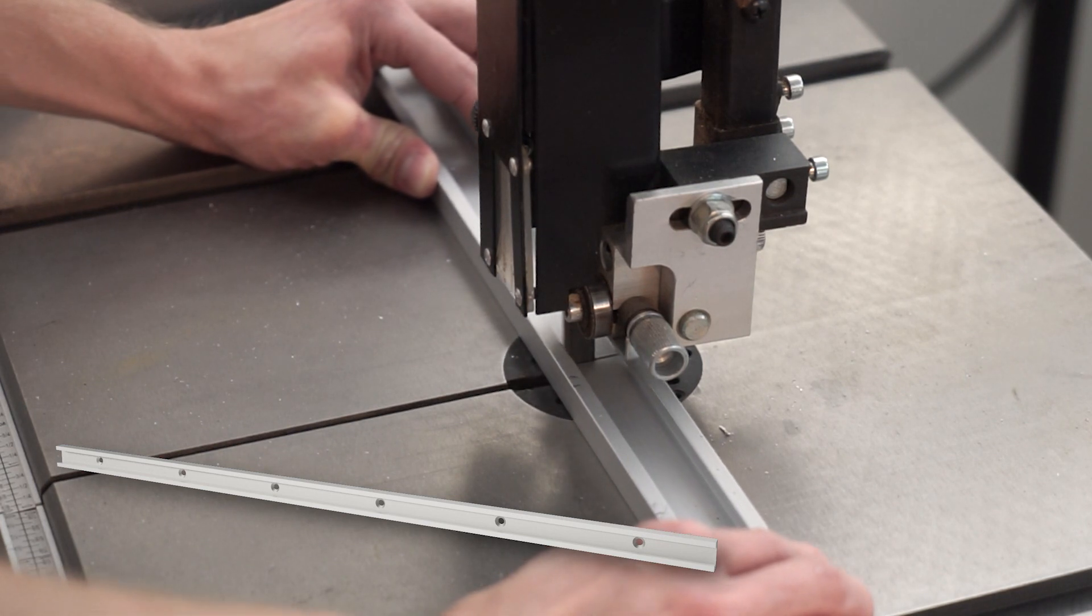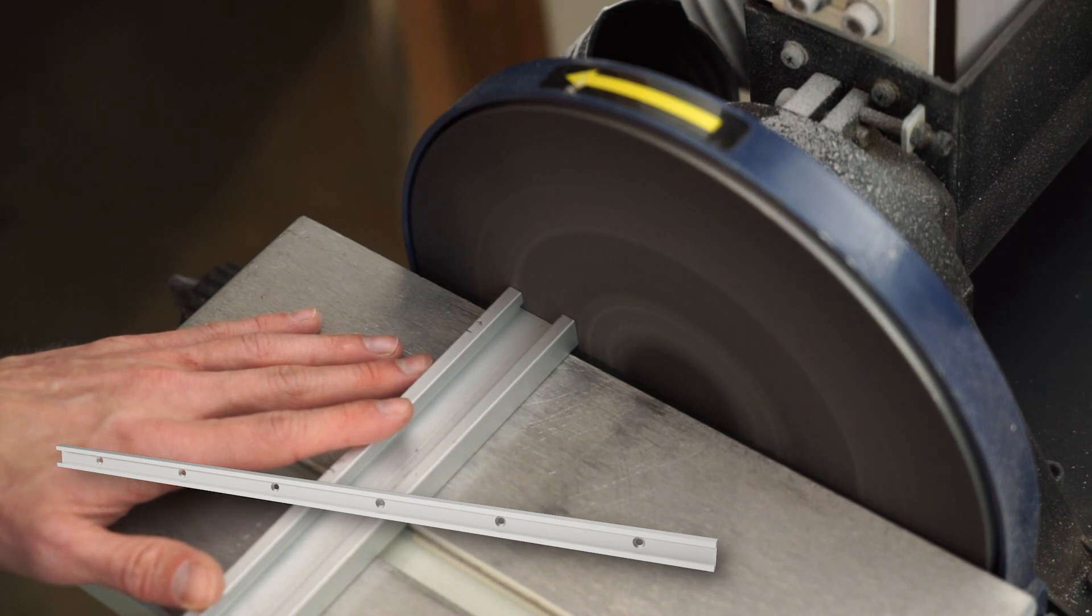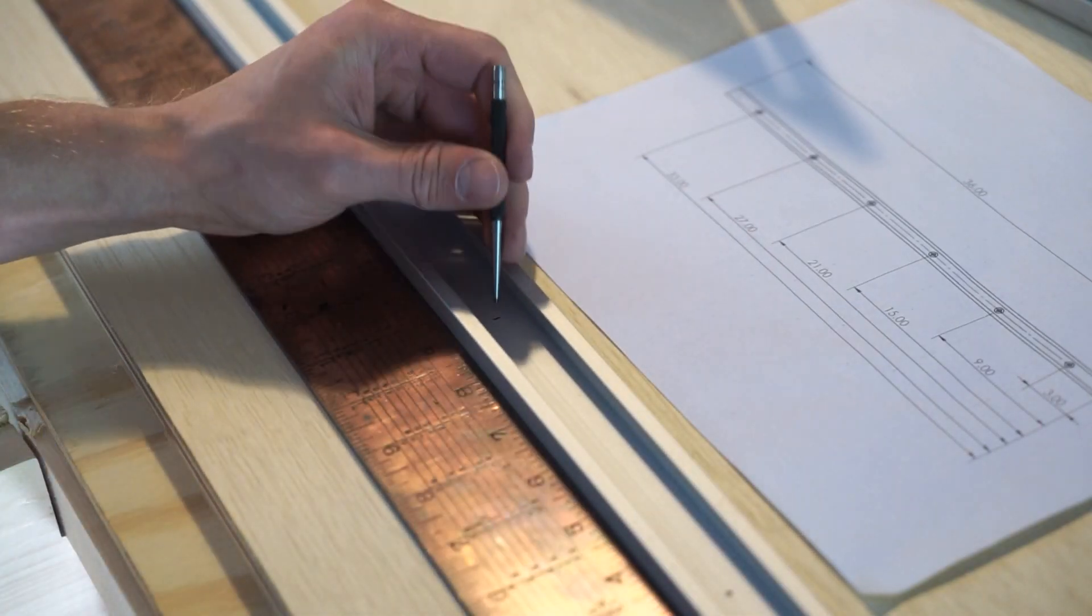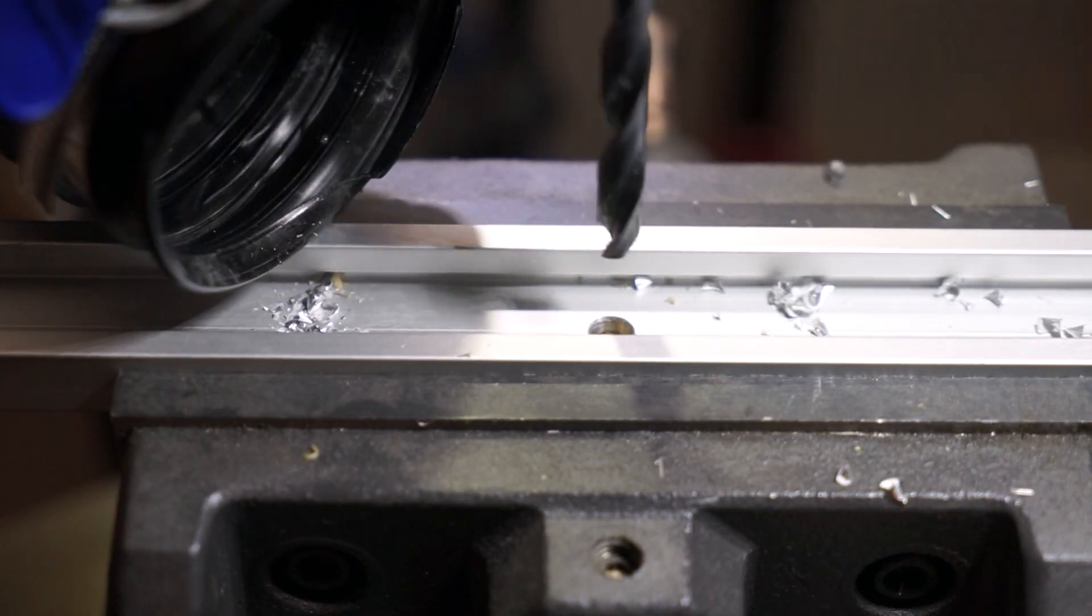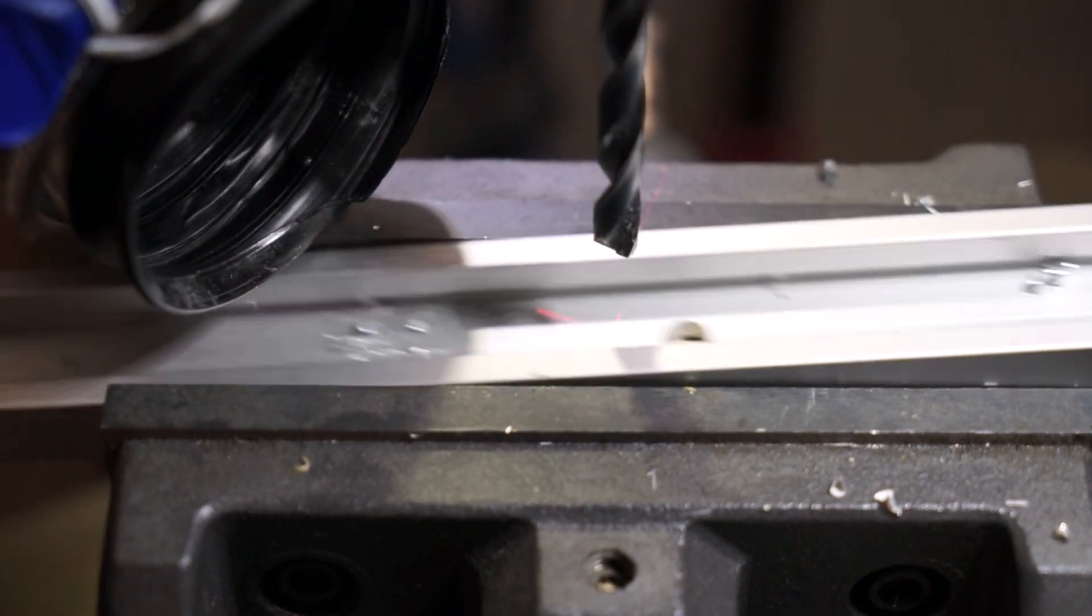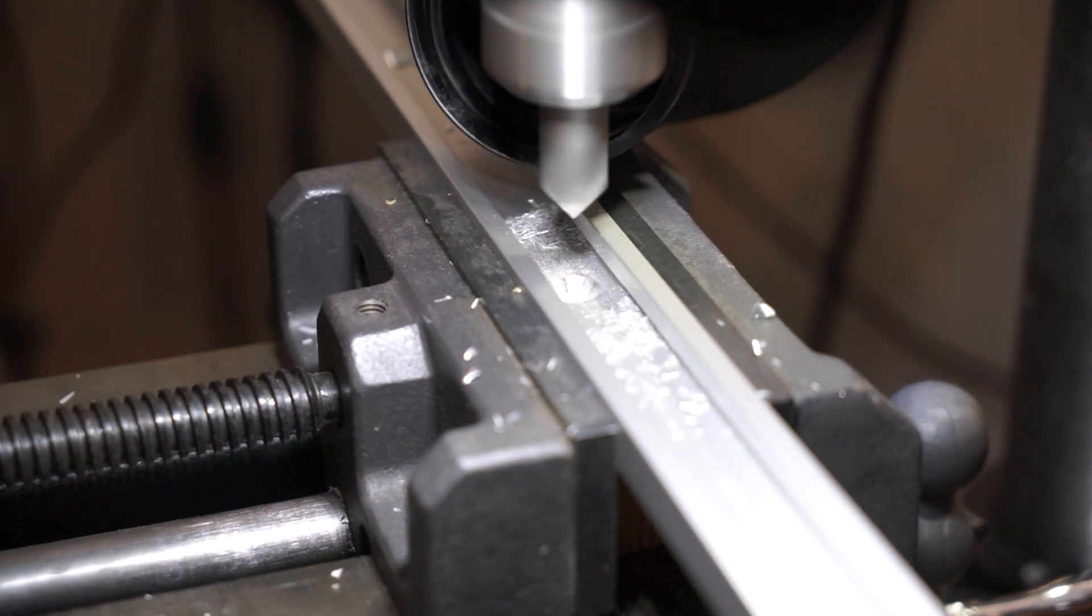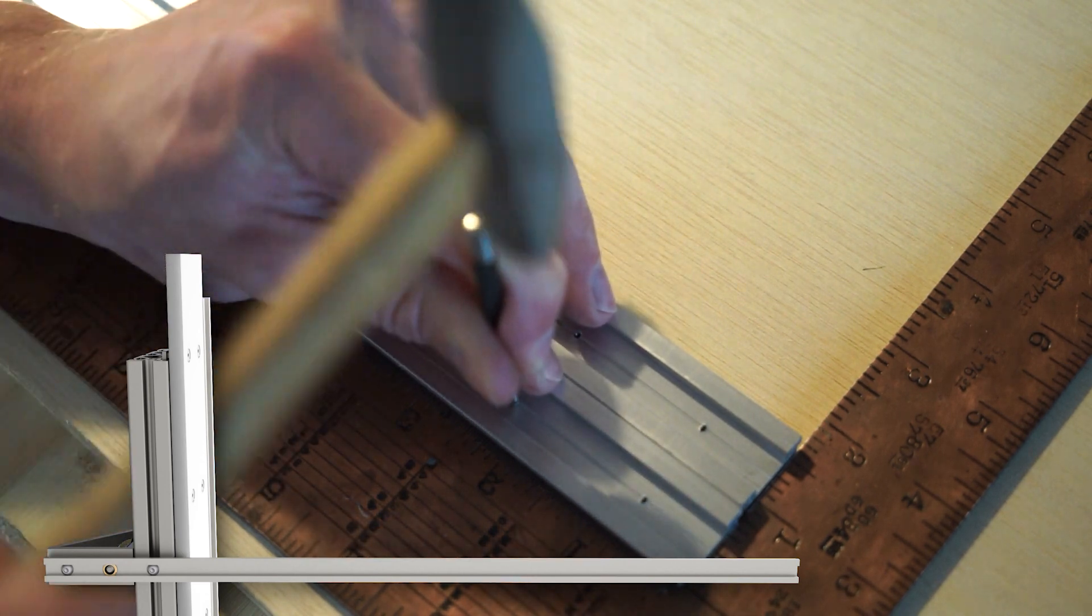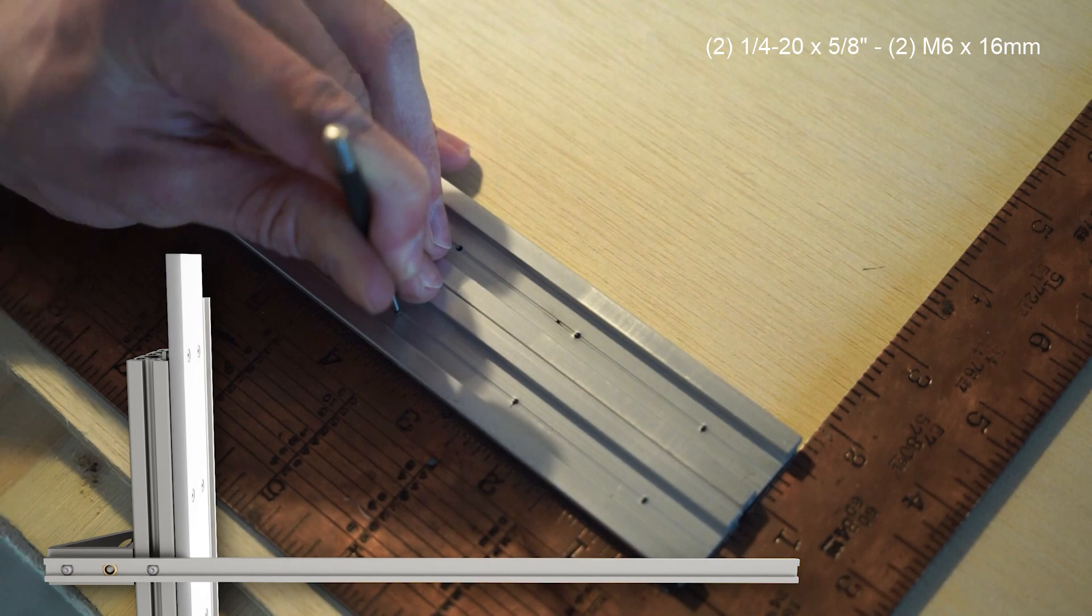Next we'll focus on construction of the multi-purpose T-track. Moving now to the fence rails, I need to prep them for several fasteners. This needs to accept two quarter-twenty bolts and one rivet nut.